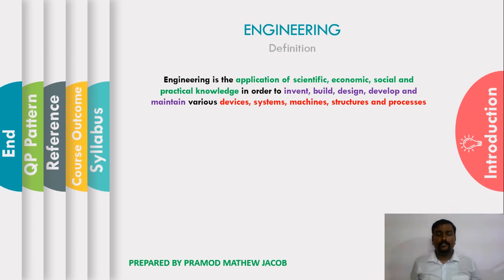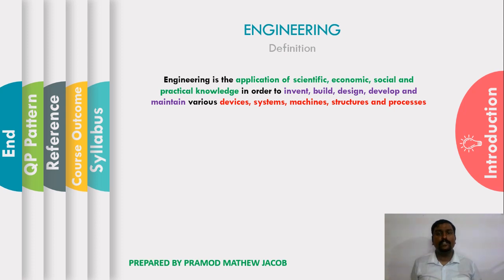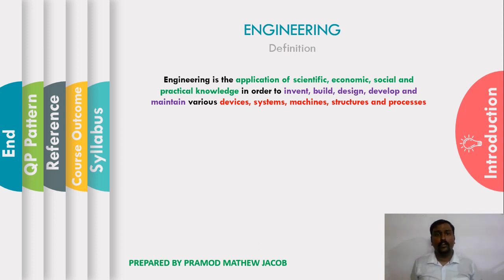The second part of the definition deals with the phases where we apply this knowledge. The first phase is invention — developing an entirely new thing which did not exist in the world before. The next is building things, such as new structures like bridges, towers, and buildings, applying scientific, economic, and social knowledge.